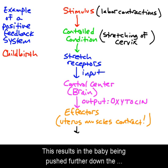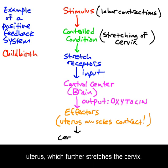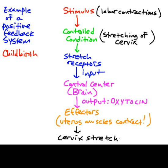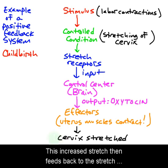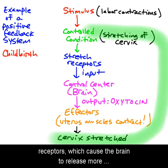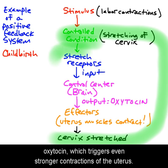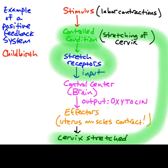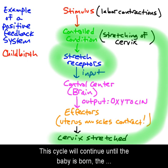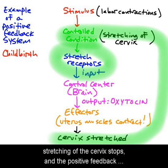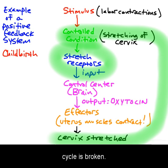Oxytocin causes the muscles of the uterus to contract even more forcefully than before. This results in the baby being pushed further down the uterus, which further stretches the cervix. This increased stretch then feeds back to the stretch receptors, which cause the brain to release more oxytocin, which triggers even stronger contractions of the uterus. This cycle will continue until the baby is born, the stretching of the cervix stops, and the positive feedback cycle is broken.